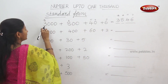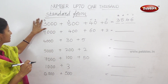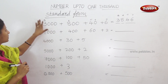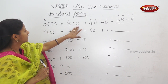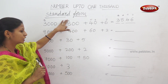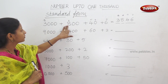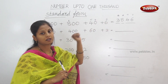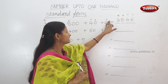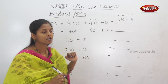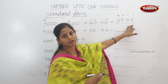Now, here in 1000s position, 3 into 3. Place value is 3000. 1000 place is 3. 800: 100s place is 8. Place value is 800. So, 100s place is 8. 4 tens is 40. 6 ones is 6. So, this number in standard form. What is 3,846?